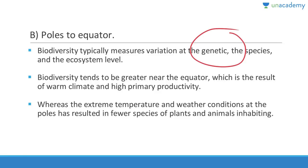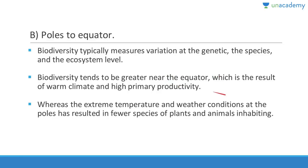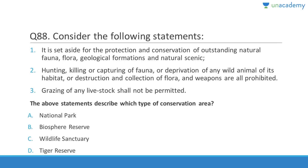Biodiversity typically measures variation at the genetic, species, and ecosystem levels, and tends to be greatest near the equator and at sea level. Extreme temperature and weather conditions at the poles result in very few species. Question 88: The description — protected area with no hunting, no habitat destruction, and no livestock grazing — is the typical definition of a national park.